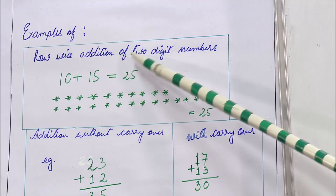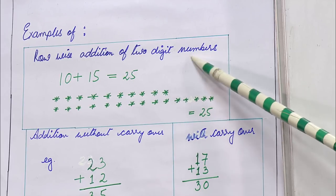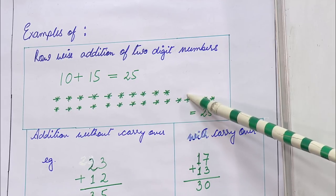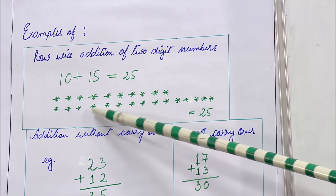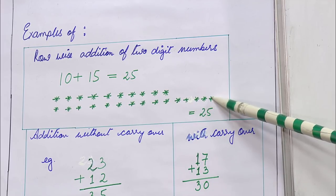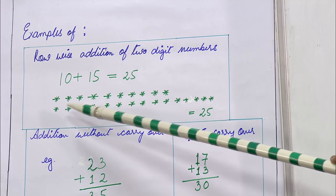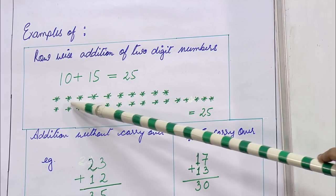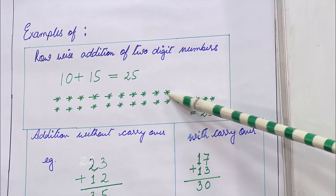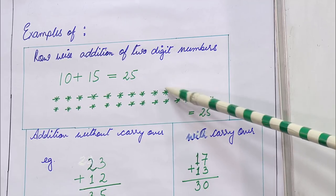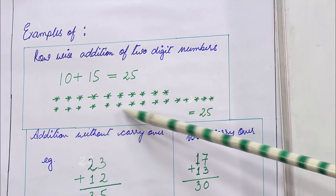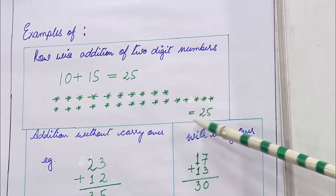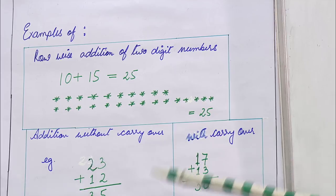In the chart I have prepared, I show examples of row-wise addition of two-digit numbers. I arranged 10 stars row-wise, and then 15 stars row-wise. To show grade 2 students how row-wise addition works, you first arrange the rows of 10 stars, then 15 stars, which makes 10 plus 15 equal to 25.